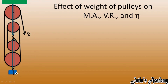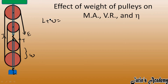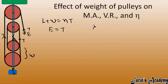For n number of pulleys, n number of tensions act upward to support the weight of the pulleys and the load. Load and weight act in the downward direction, and n tensions act in the upward direction. At the effort point, effort acts downward and the tension in that string balances it, so effort is equal to tension.